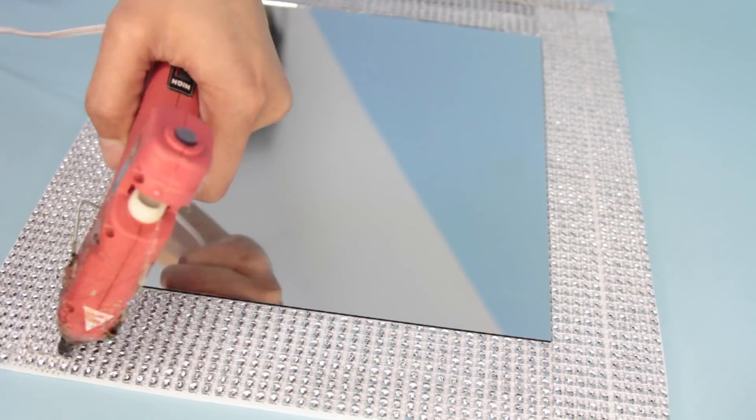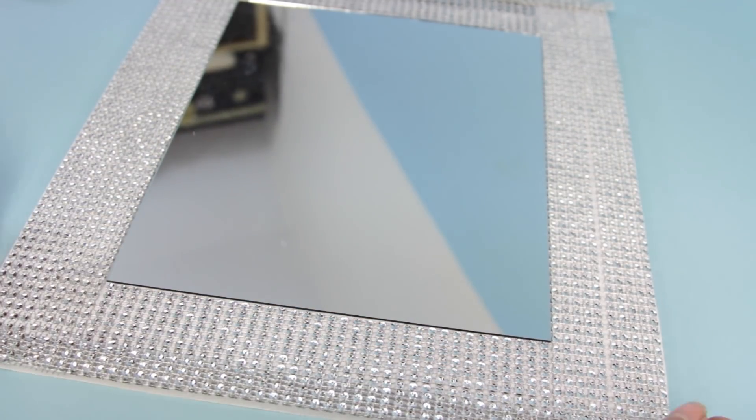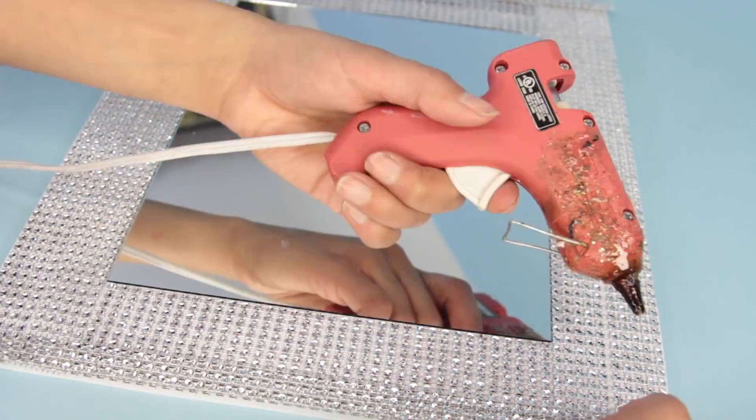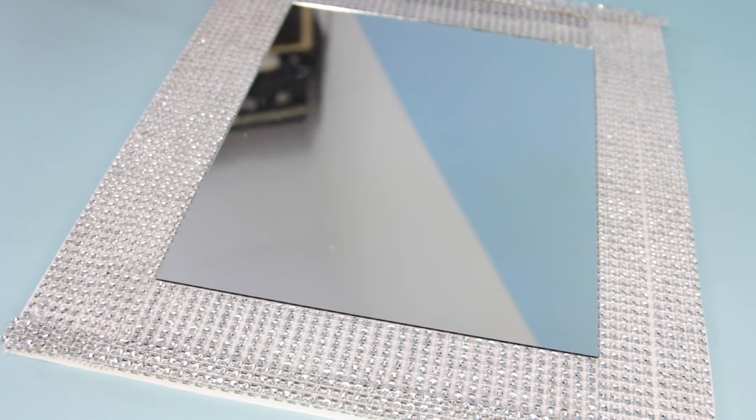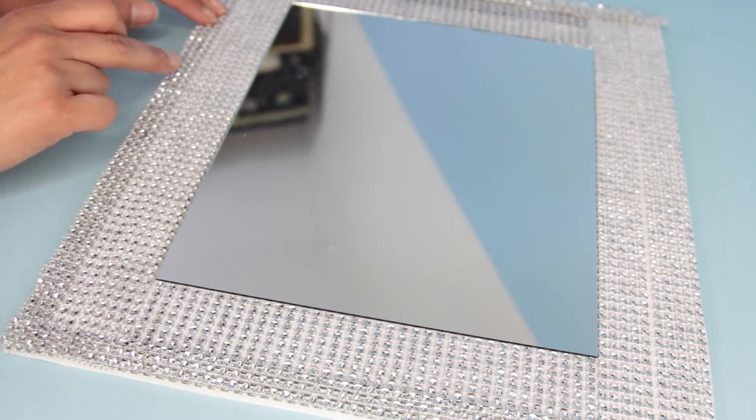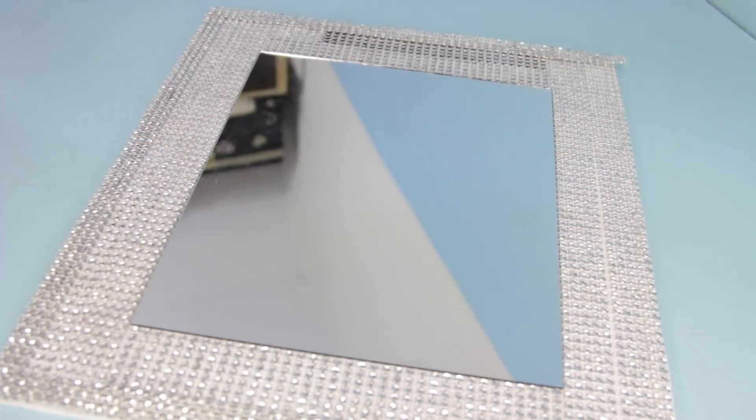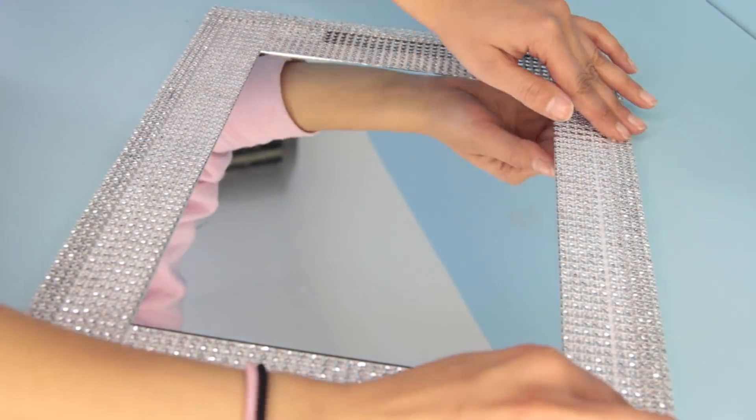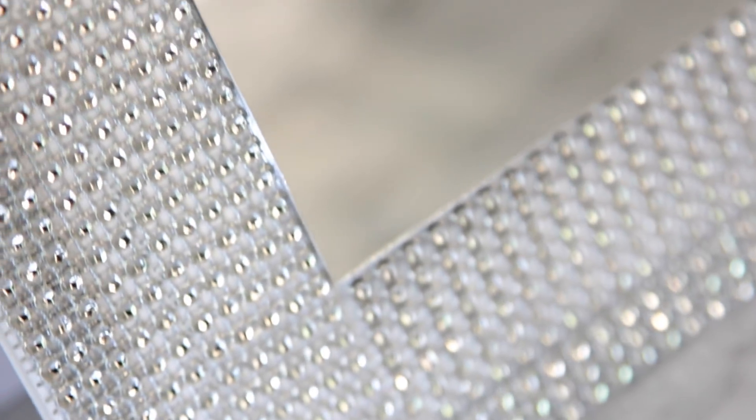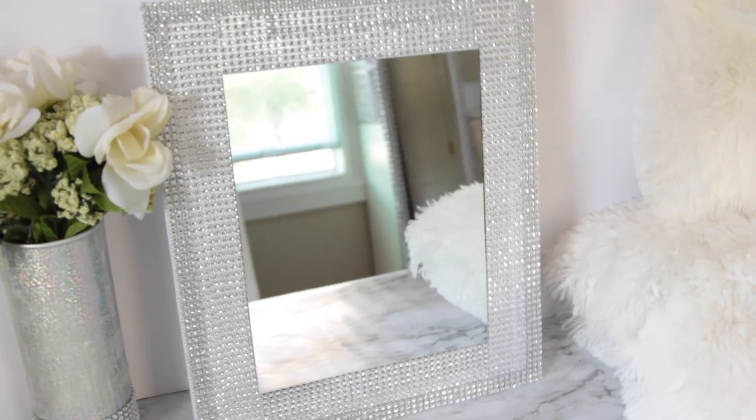I wanted to define the edges of this blinged out mirror. So to do that, I just added another layer of the diamond wrap, but I cut it down so that it's just three rows. And then I just add that around the edges. And it just really defines it in my opinion. So that is all I did for this Dollar Tree mirror. It only cost me three dollars to make and it was super easy.